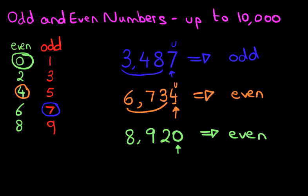And if 0 is an even number, the whole number, 8,920, is also an even number.